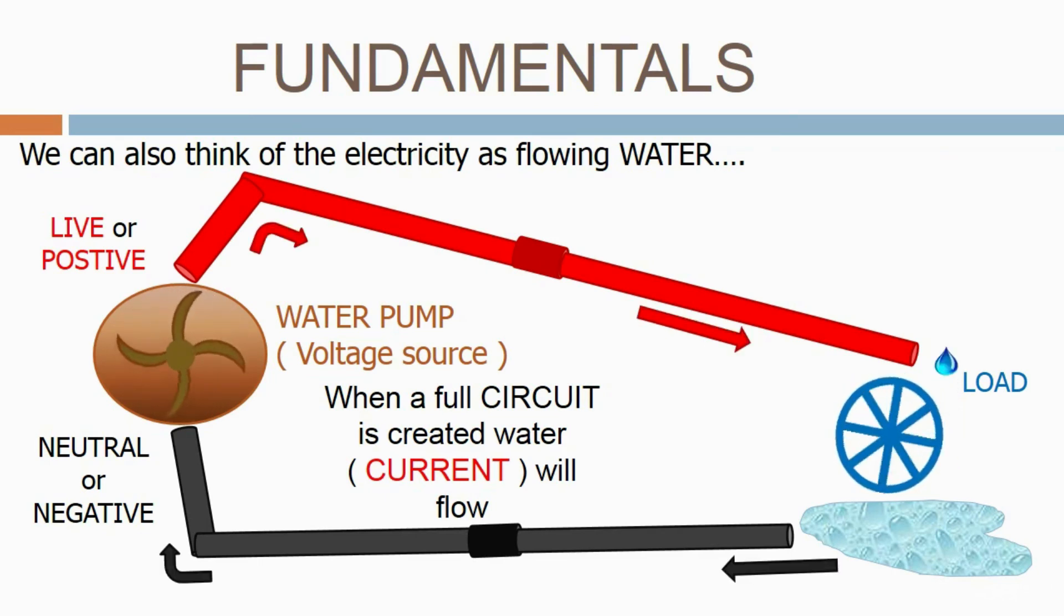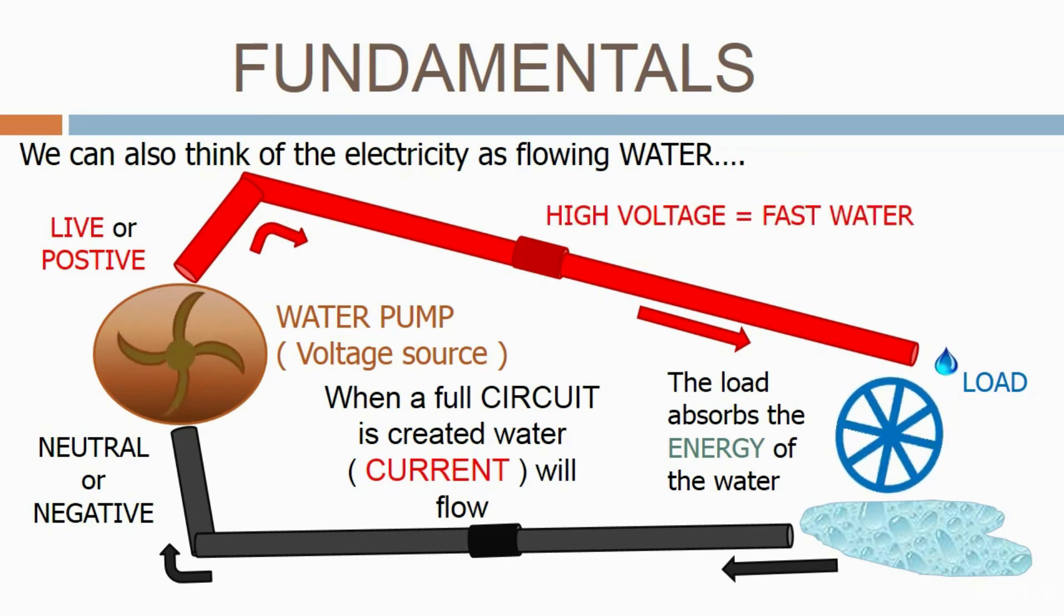When a full circuit is created, water or current will flow. As we said, it goes through the live, through the load, and back through the neutral. The load absorbs the energy of the water. Therefore, in the live or positive side, the water is quite fast and there's a high voltage. On the neutral side, the water is running slower; therefore, we have a low voltage.